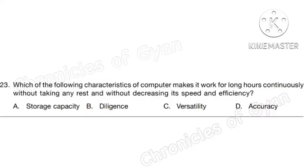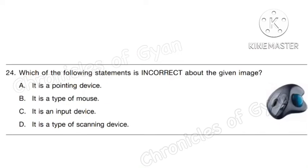Question 23. Which of the following characteristics of a computer makes it work for long hours continuously without taking any rest and without decreasing its speed and efficiency? Correct answer is option B: diligence. Question 24. Which of the following statements is incorrect about the given image? This is a trackball, and the incorrect statement about it is option D: it is a type of scanning device.